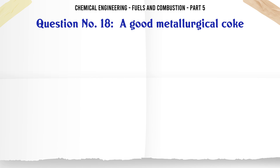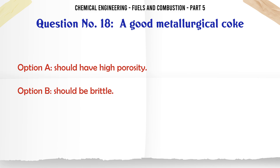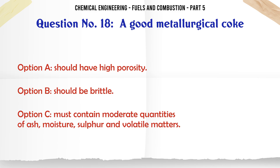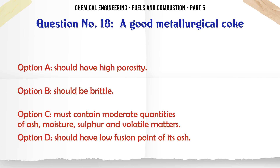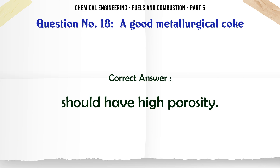A good metallurgical coke: A. Should have high porosity. B. Should be brittle. C. Must contain moderate quantities of ash, moisture, sulfur and volatile matters. D. Should have low fusion point of its ash. The correct answer is should have high porosity.